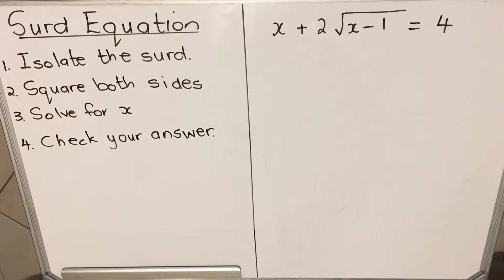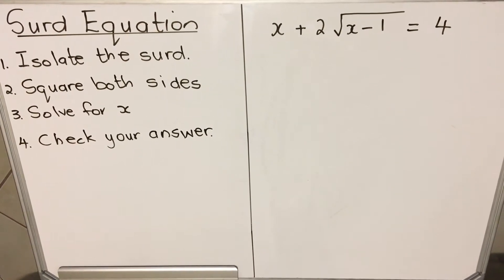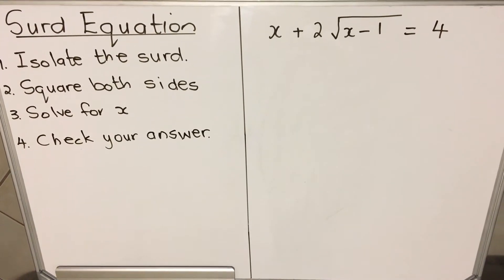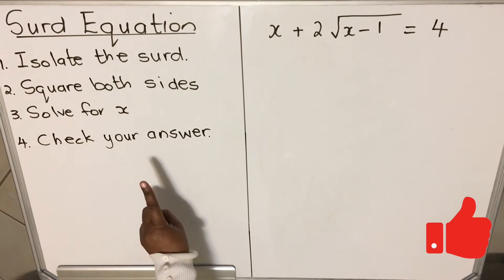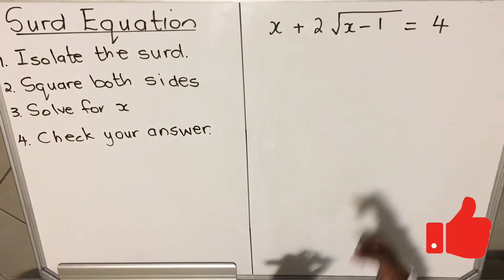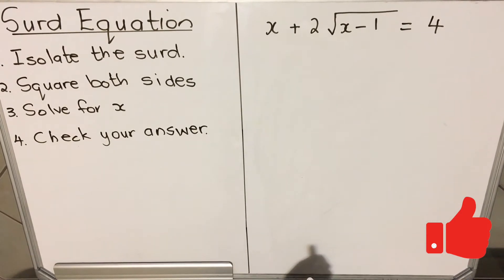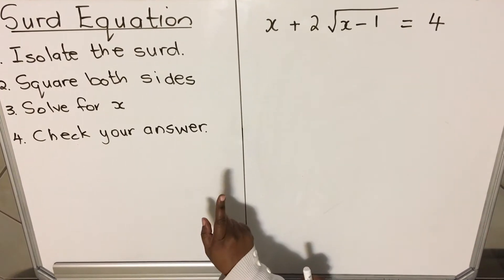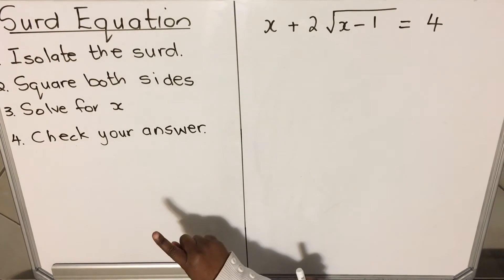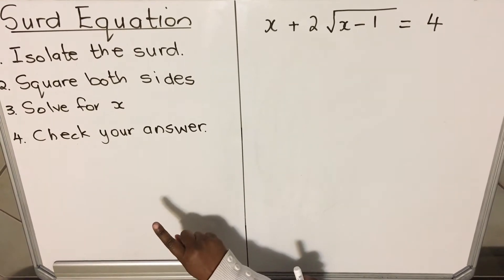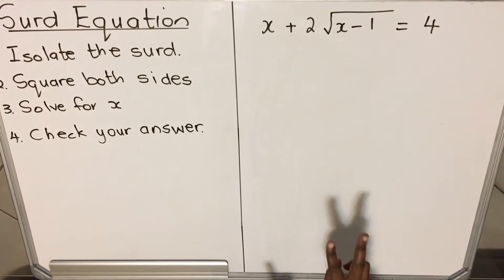Hello everyone, this is a lesson on surd equations. I'm going to show you how to solve surd equations. The first step is to isolate the surd. When we talk about the surd, we're talking about the square root, so you need to leave that all by itself. Then you square both sides. You solve for x, and then the last step, you check your answer. You usually get two answers and one of them is not correct.